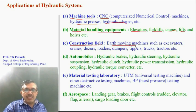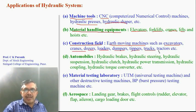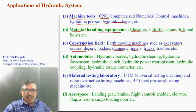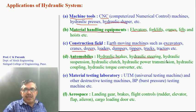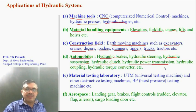Hydraulic systems are used in the construction field for earth-moving machines such as excavators, cranes, bulldozers, loaders, dumpers, tippers, trucks, and tractors. In automobiles, they are used for hydraulic brakes, hydraulic steering, hydraulic suspension, hydraulic clutch, hydraulic power transmission, hydraulic coupling, and hydraulic torque converters.